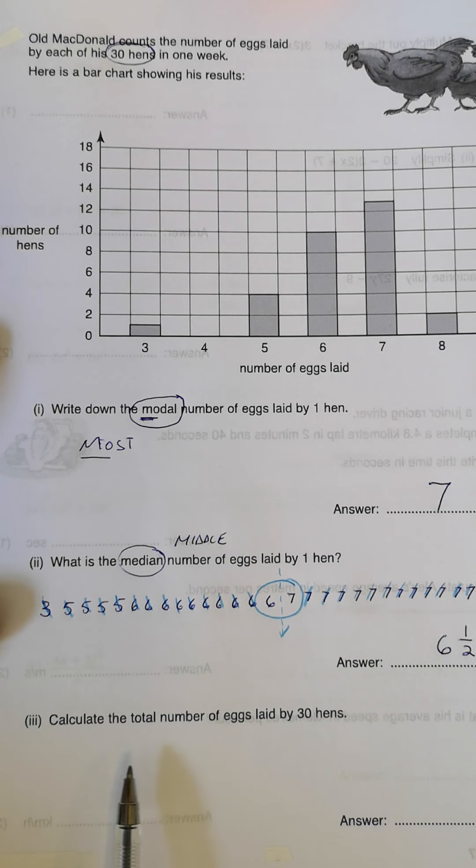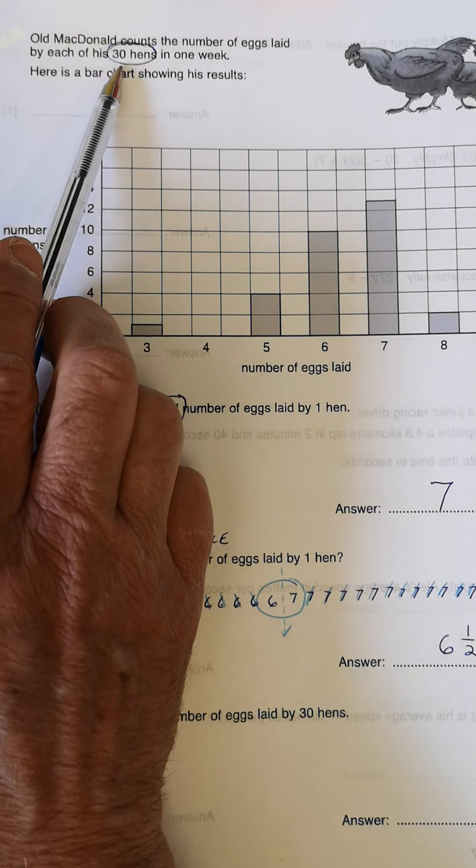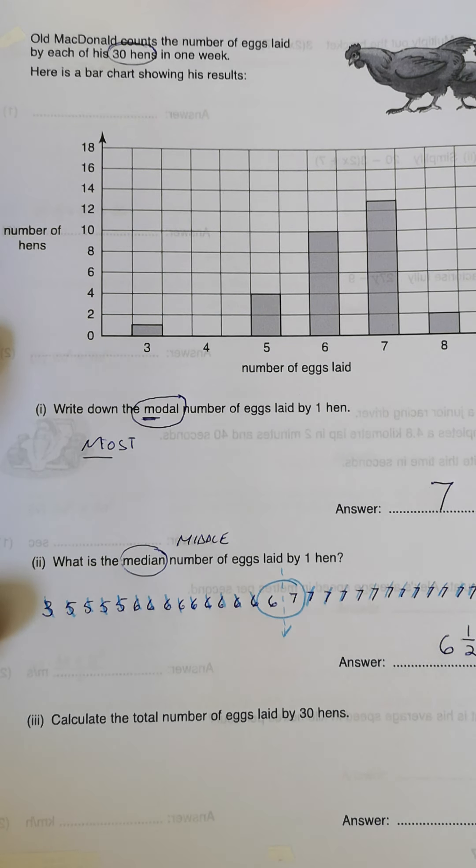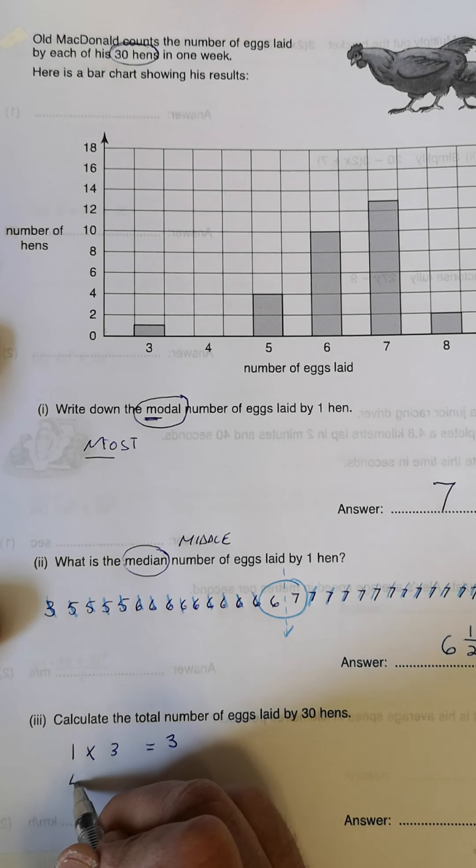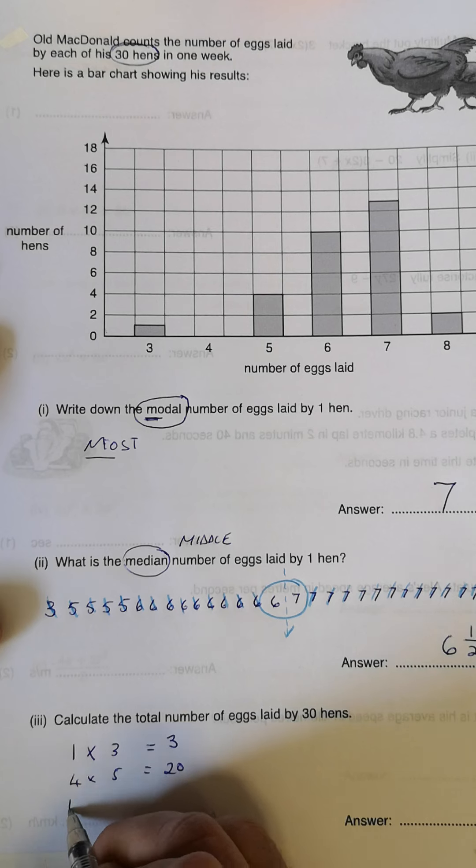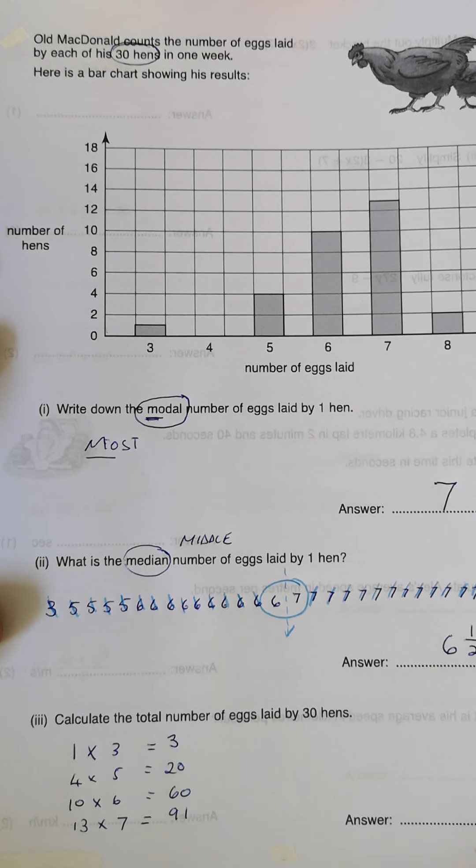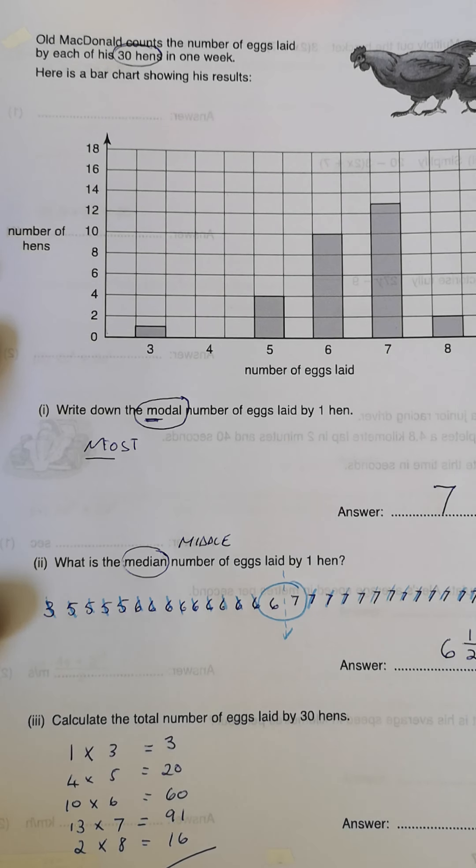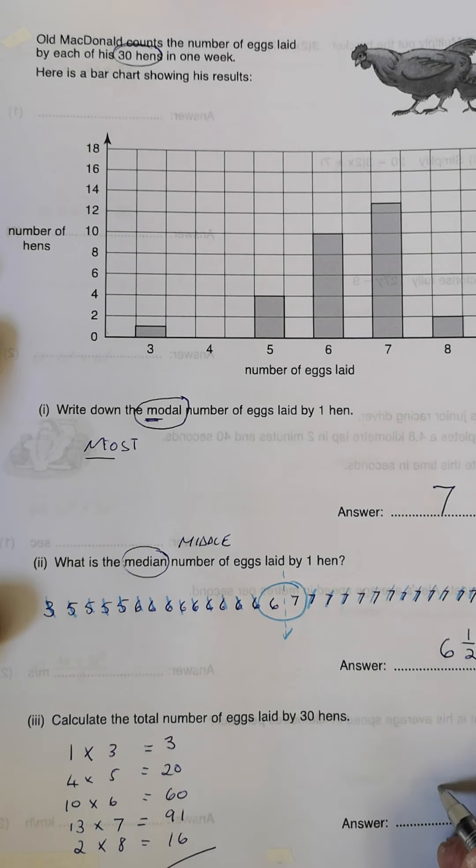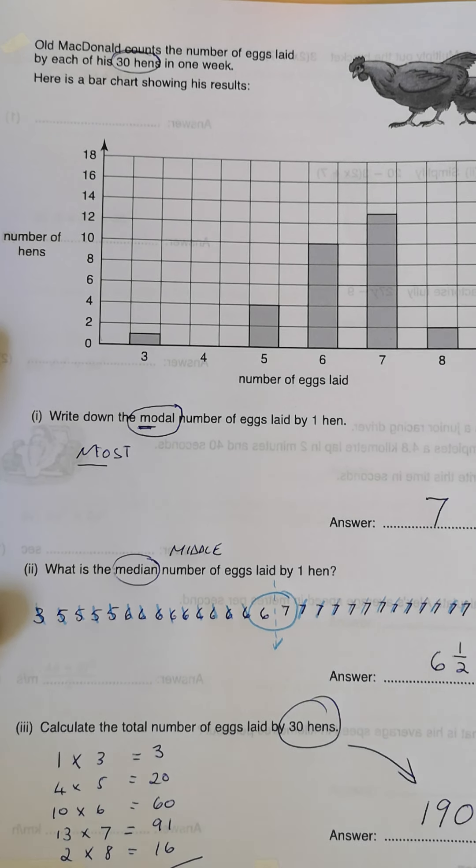Now we're calculating in this question the total number of eggs laid by the thirty hens. We have thirty hens. Now we've got to work out. So one hen laid three. One times three gives me three. Four laid five. So that gives me twenty. Ten laid six. That gives me sixty. Thirteen laid seven. So that gives me ninety-one. And two laid eight. And when I add all of those, remember this question features in a calculator paper. When you add them all up, you will see that in total, the thirty hens laid a hundred and ninety eggs.